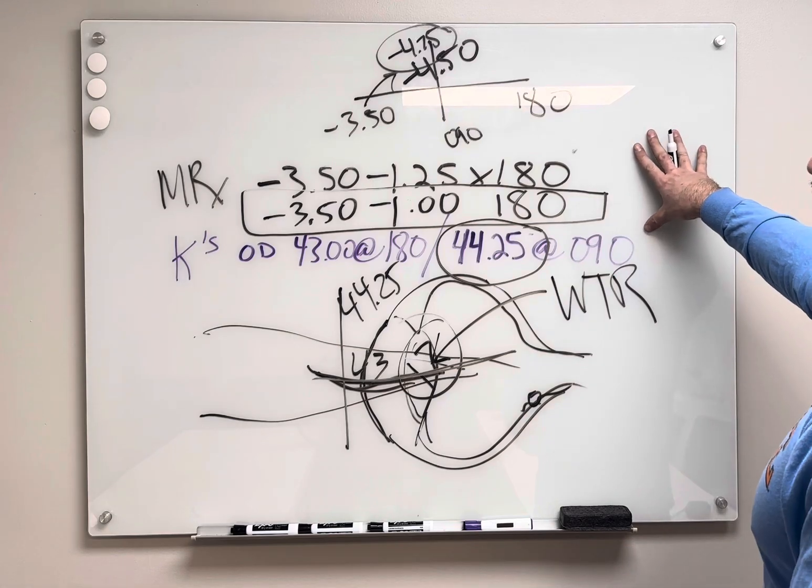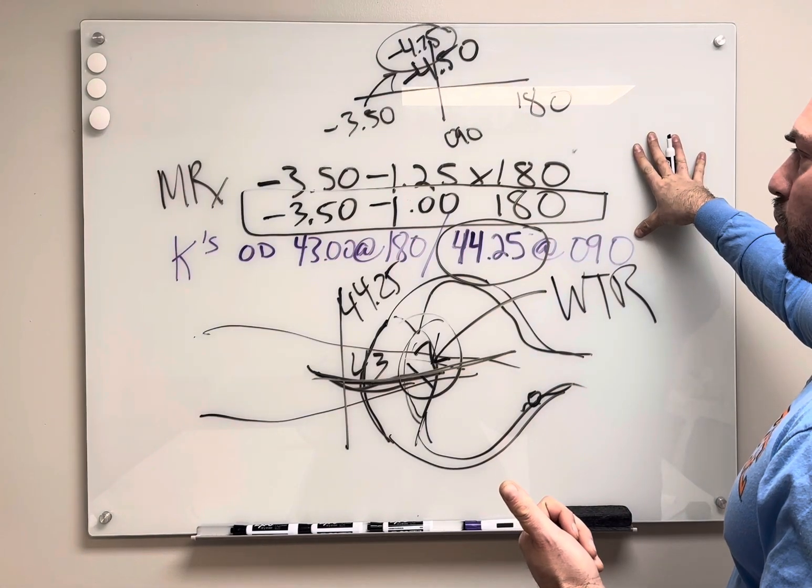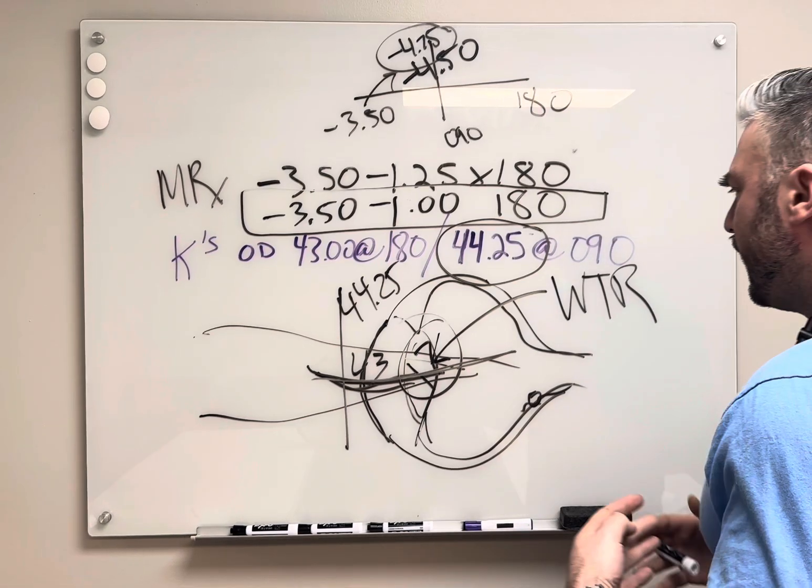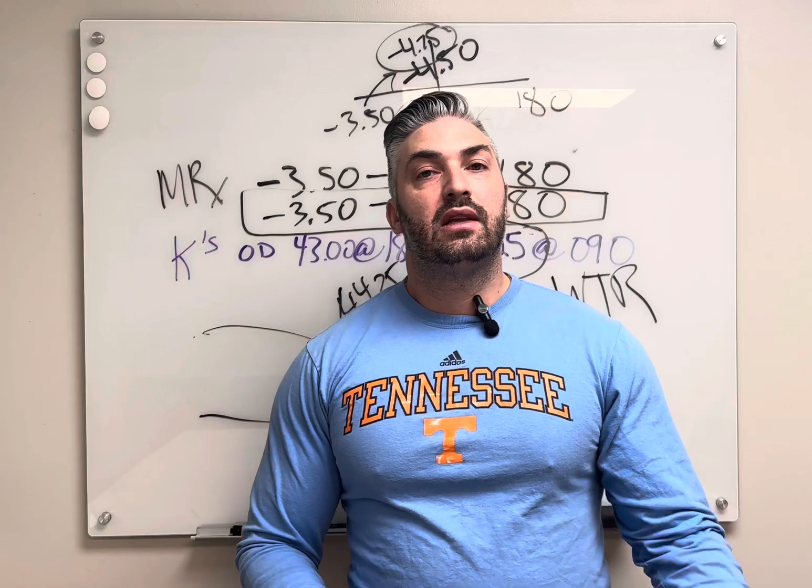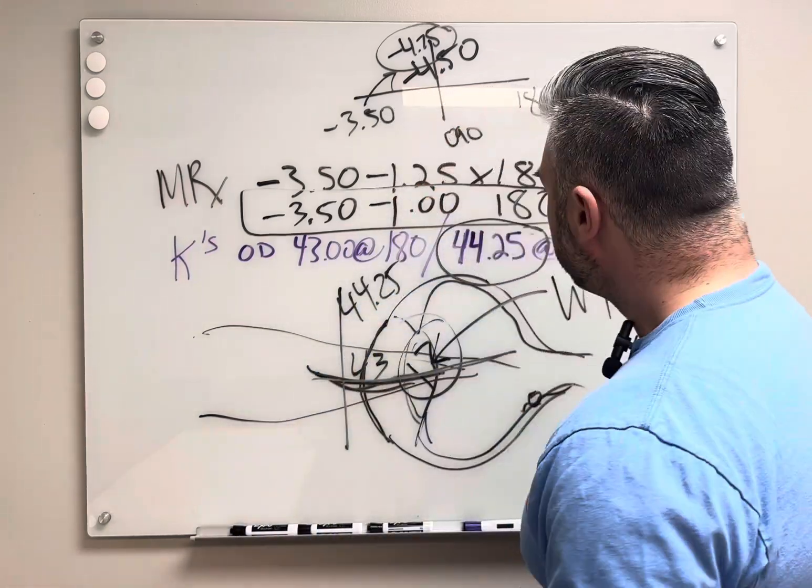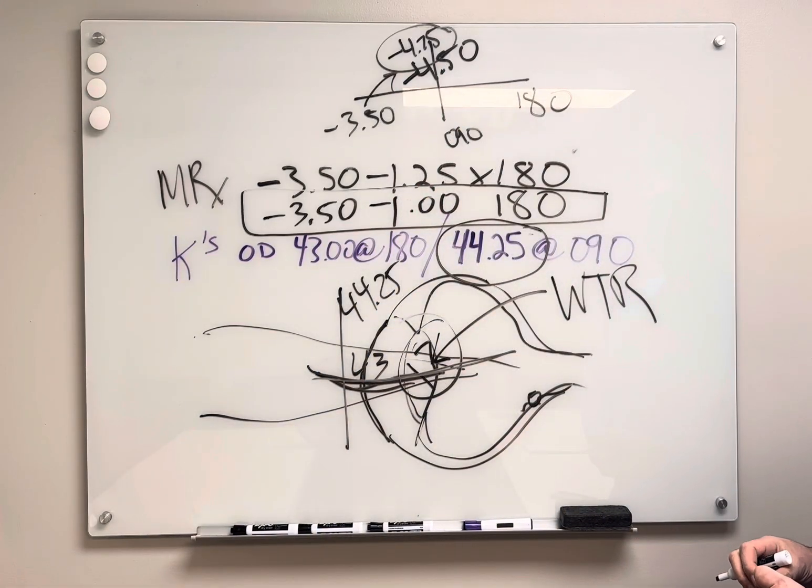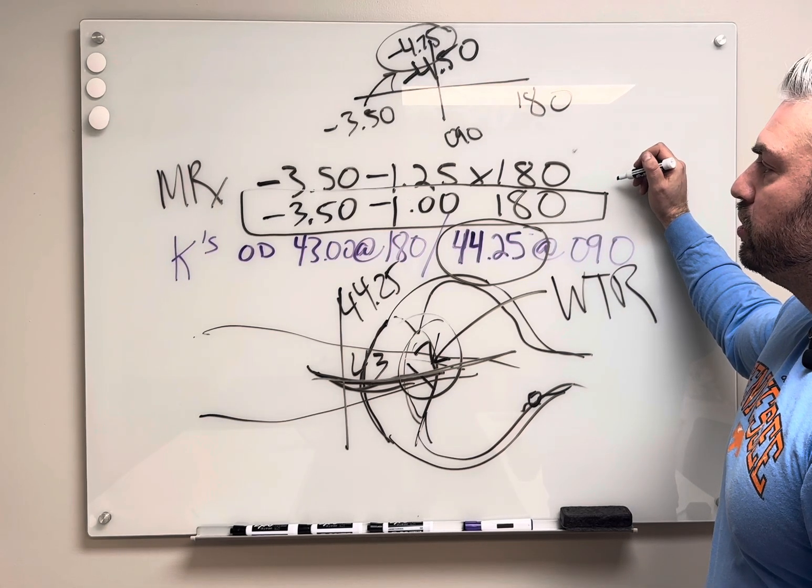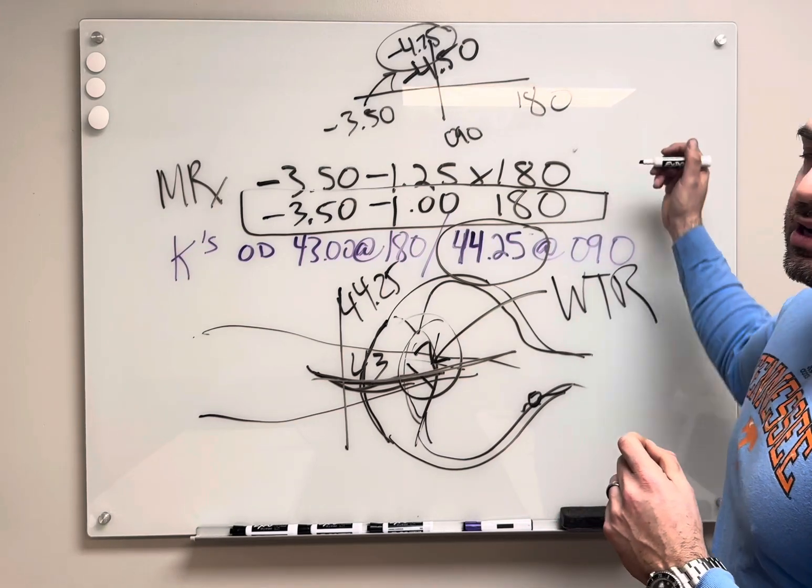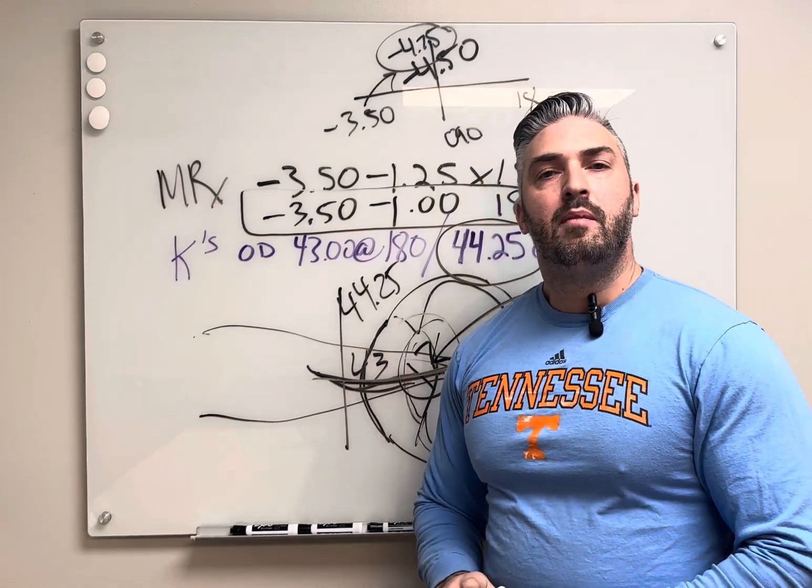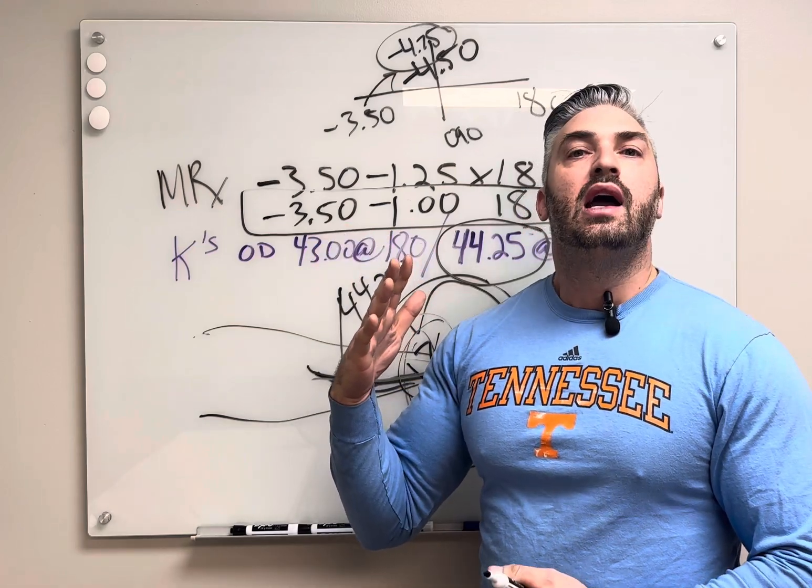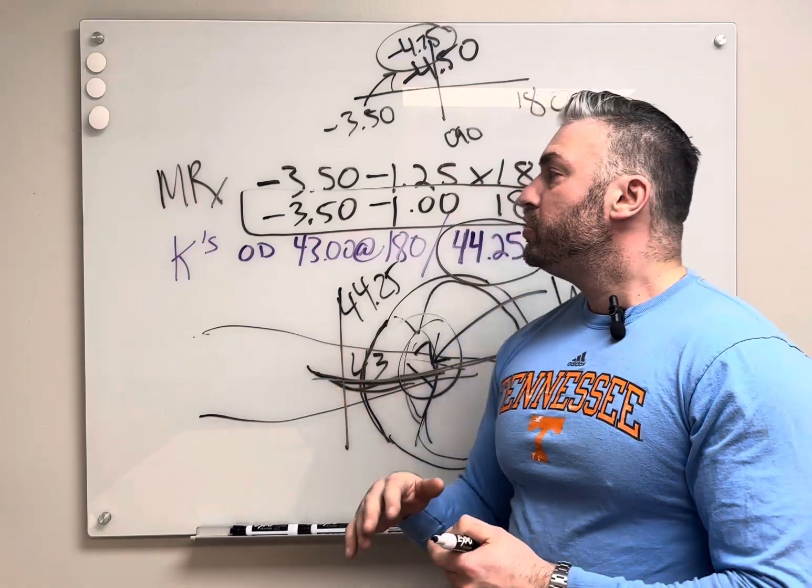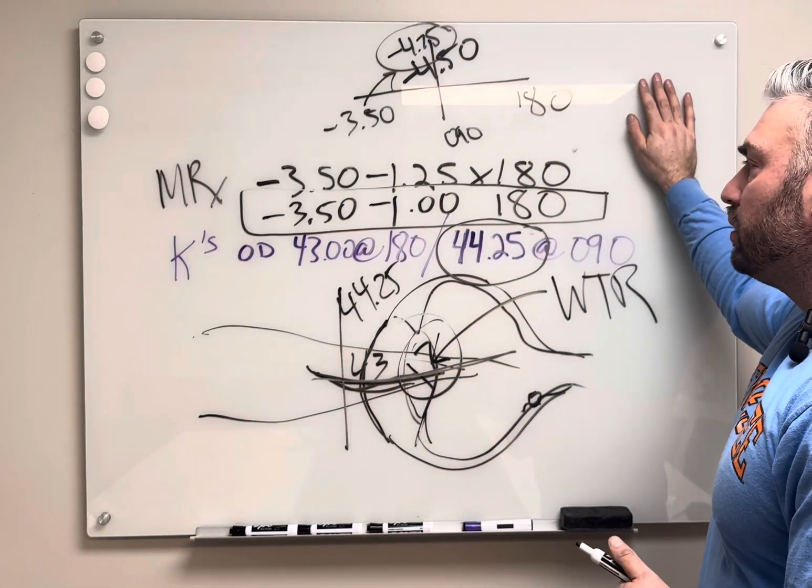So for this example, we put it in minus cylinder form. We compensate for vertex distance. Now a lot of questions are going to say, what's the best lens for this patient? What should I fit them with? Well, you have some options here. You could use a soft contact lens. There's no reason you couldn't use a soft lens. But that would have to be a toric contact lens because soft contact lenses drape the cornea and they're presenting all the power within the lens. Whereas you could use a gas permeable lens or a hard lens.